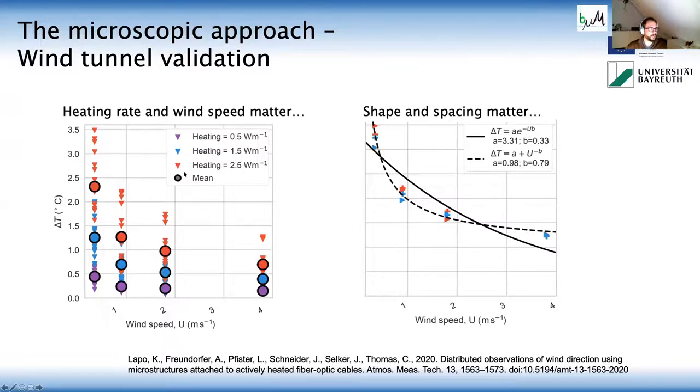And on the left hand side, you see basically that the heating rate matters. So the more we heat the cables, kind of makes sense, the higher is the temperature signal. But if the wind speed gets too strong, the turbulence that already is in the wind tunnel washes out the one that's generated by these microstructures, so we lose the signal.